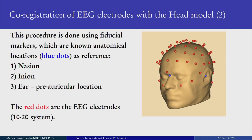This procedure is done using fiducial markers which are anatomical locations. The nasion is one such point, then there is the inion — a ridge at the back — and then two preauricular ridges. These are the anatomical landmarks for the MRI. The red dots are the EEG electrodes and they arise usually from the 10-20 system.